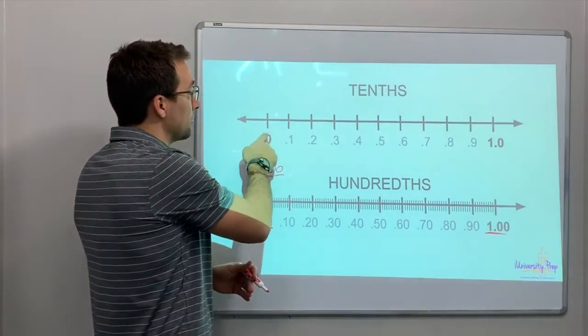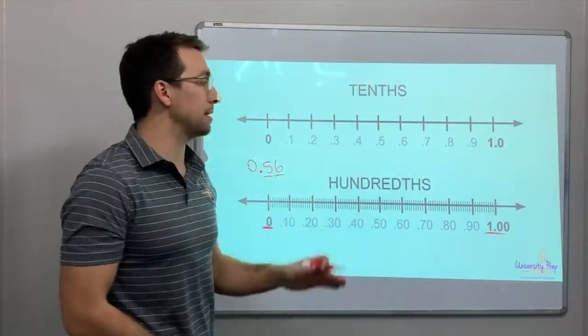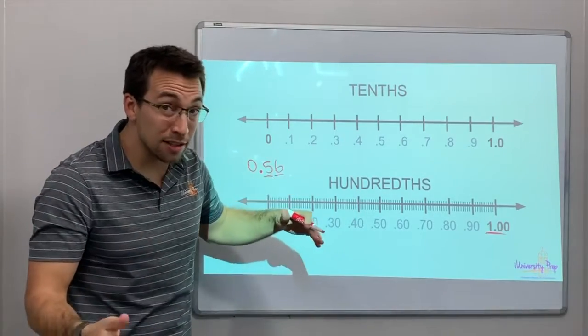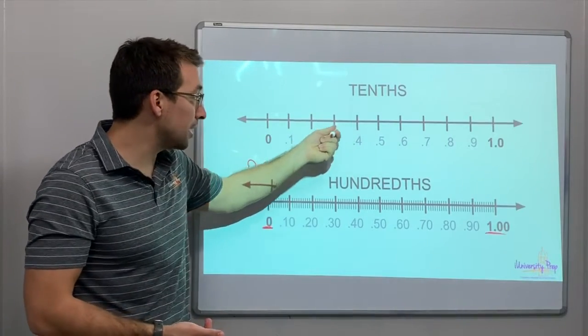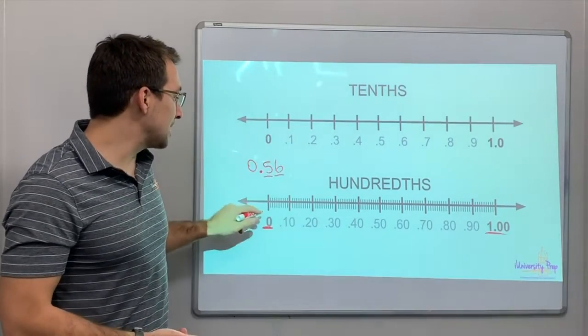If you're dealing with tenths, check it out, zero to one, you have ten spaces. But, if you're dealing with hundredths, you have to multiply ten times ten. That's a hundred, right? Ten, ten, ten, ten. So, fifty-six.